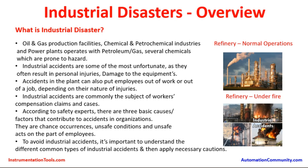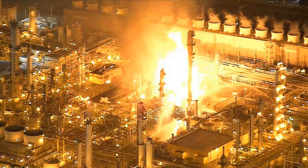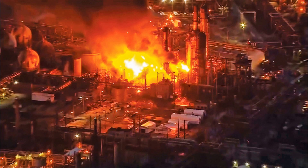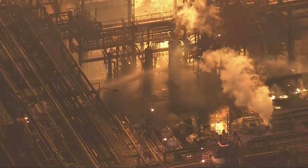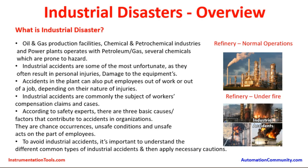We can see fire engulfing different units of the plant, fire extinguishers being used, and one more tank which is under fire. According to safety experts, there are three basic causes that contribute to accidents in organizations: chances of occurrence, unsafe conditions, and unsafe acts on the part of employees. Accidents do not happen by themselves — there is some error or mistake, knowingly or unknowingly. To avoid industrial accidents, it is important to understand the different common types and apply necessary cautions.